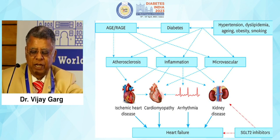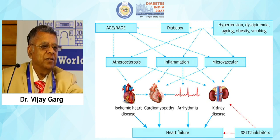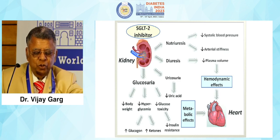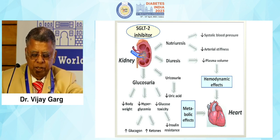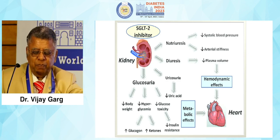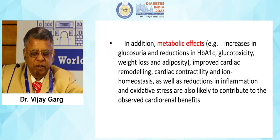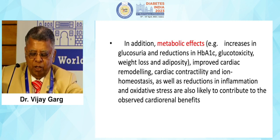Patients with older age, diabetes, and hypertension all cause atherosclerosis, inflammation, and microvascular damage, leading to heart disease, cardiomyopathy, arrhythmia, and kidney disease. SGLT2 inhibitors are the platinum standard for all these conditions. They reduce uric acid, cause glycosuria, increase ketones, and reduce insulin resistance. Through natriuretic effects, they reduce blood pressure, arterial stiffness, and plasma volume. Additionally, glycosuria and HbA1c reduction, reduced glucotoxicity, weight loss, and adiposity reduction improve cardiac remodeling, cardiac function, and iron homeostasis.